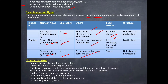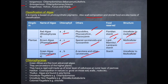Brown algae store food as lipids, mannitol, and laminarin. Red algae store food as floridian starch. Green algae store food as starch. Red algae range from unicellular to multicellular. Brown algae are multicellular. Green algae also contain both unicellular and multicellular forms.